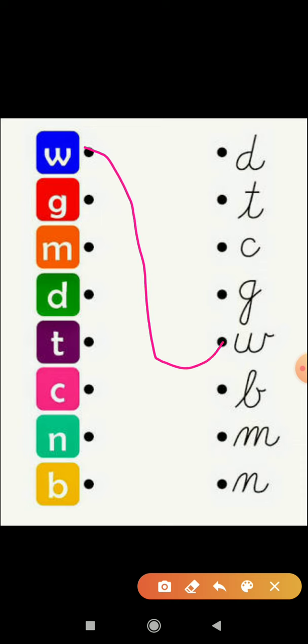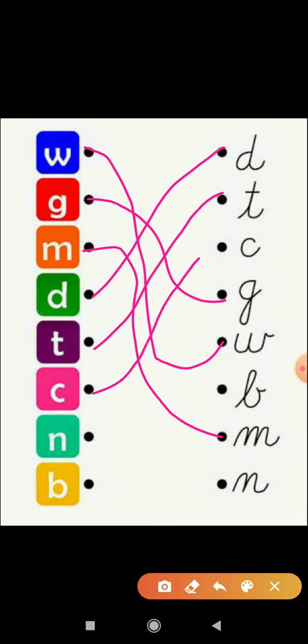This W is cursive. G, G is here, okay. M, M cursive is here. D, cursive D is here. And T, T also here. And C, C, how to write cursive C? Just like this, okay. And N, we will write in cursive just like it. And B, B is here, okay.